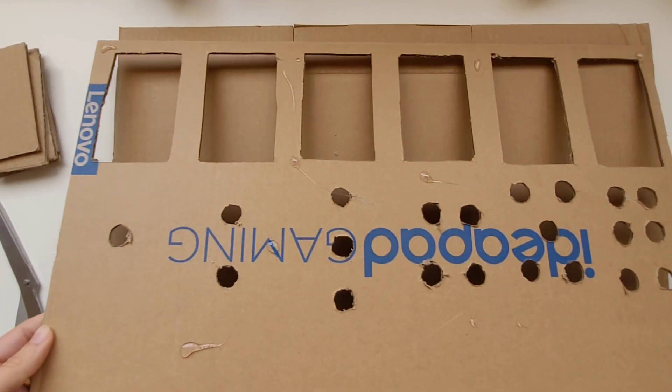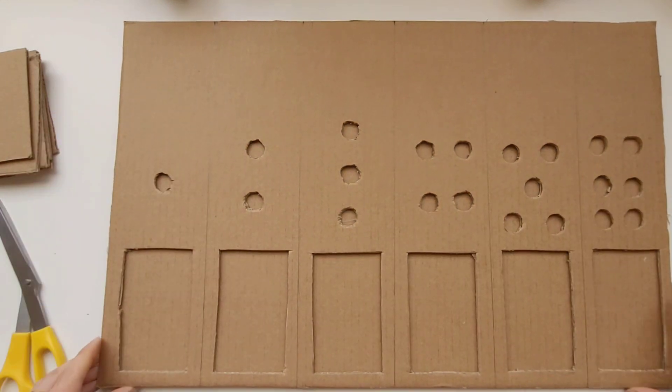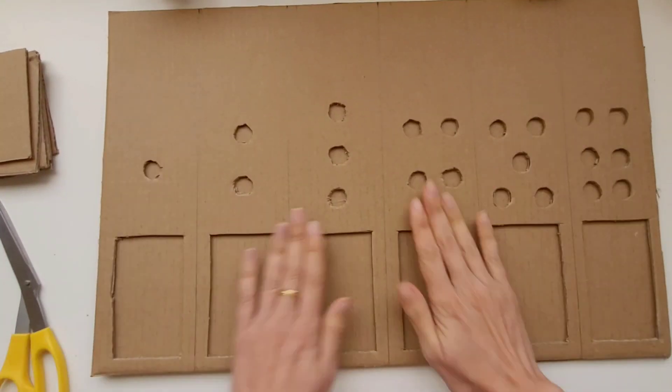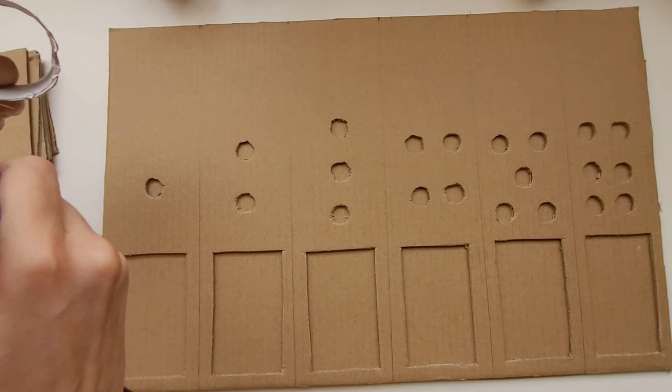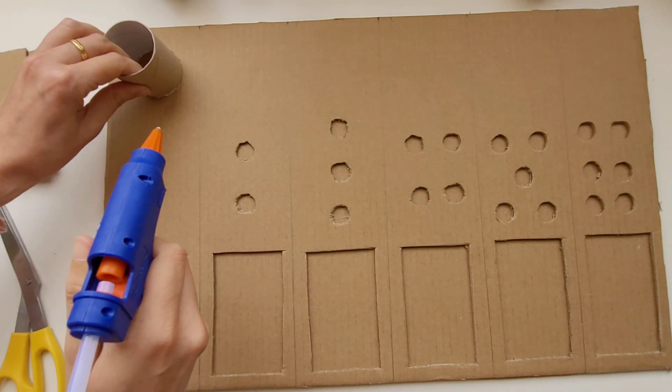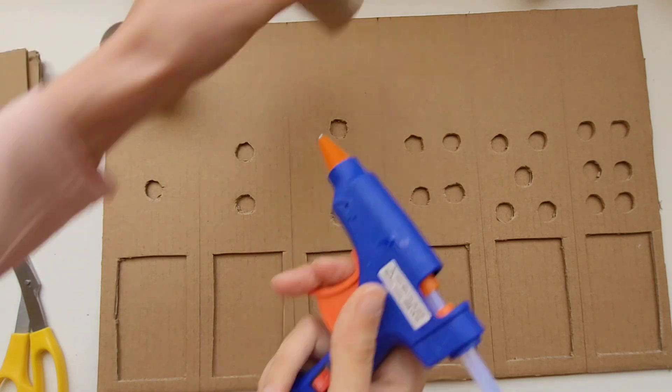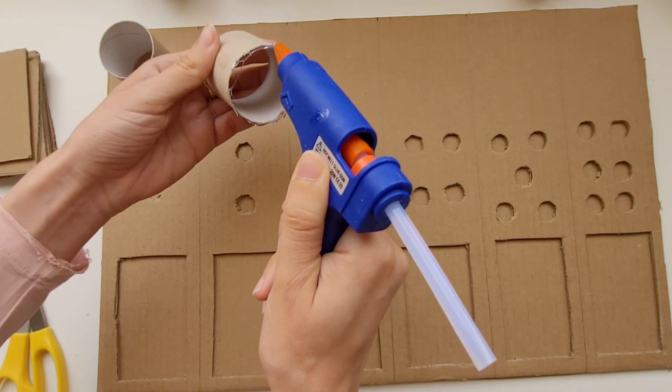Then glue the top piece of cardboard onto the bottom piece of cardboard. Once the top piece of cardboard is secured to the bottom piece of cardboard, I'm going to start gluing on the toilet paper rolls to the top. I'm going to glue one toilet paper roll on top of each strip.